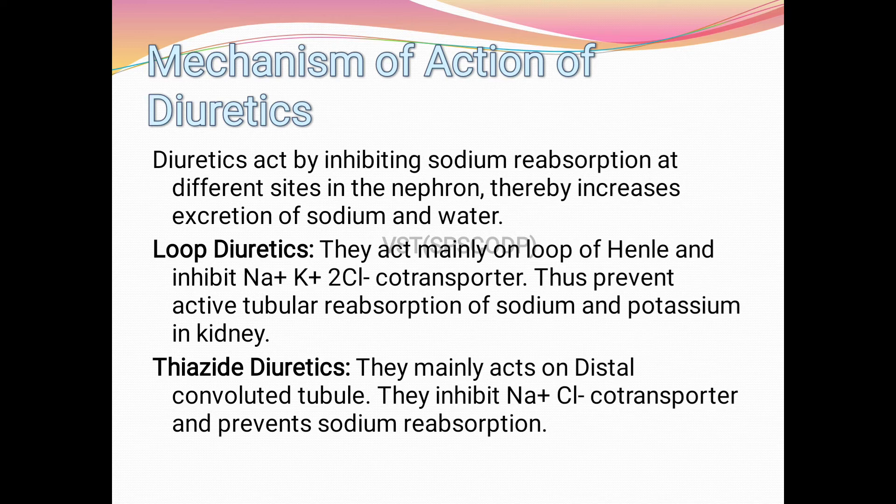In the ascending limb, the sodium-potassium-chloride co-transporter is inhibited. This means sodium and potassium reabsorption from the nephron lumen back into the blood circulation is blocked — sodium and potassium are therefore not absorbed into blood capillaries and are instead excreted.